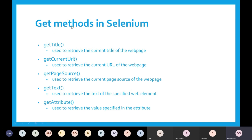Now let's go to get methods. There are different ways you can use these. First, you might want to get the title of the page you are on. This is very important when you are trying to validate that you are on the right page, because your automation code may not always land on the correct page. To get the title, you just say driver.getTitle() and that will display the title of that particular page.